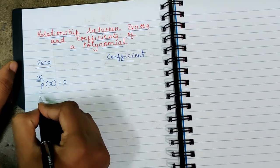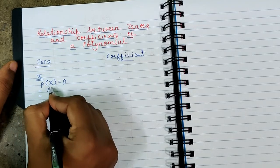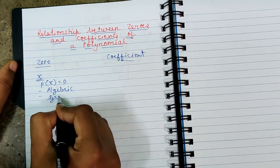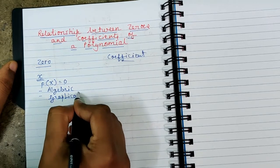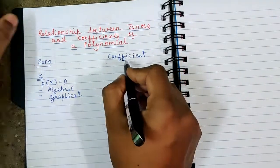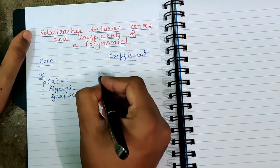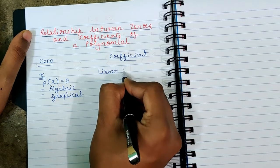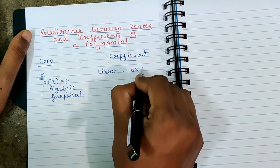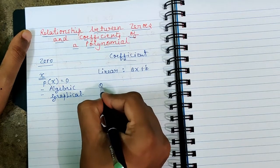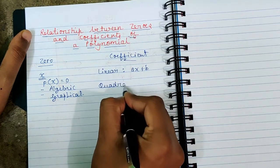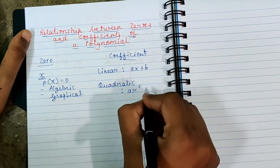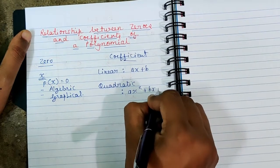Yesterday we saw two methods to find the zero of any given polynomial: the first was the algebraic method and the second was the graphical method. Now let us revisit what a coefficient is. We saw three different types of polynomials: first was linear, with general equation ax + b; then we saw quadratic, with general equation ax² + bx + c.